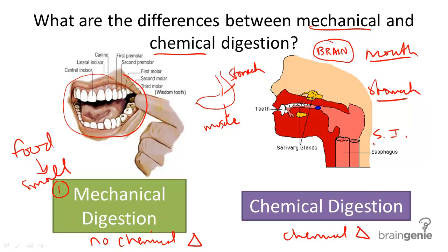This starts the process of chemical digestion. An enzyme known as salivary amylase will break down carbohydrates into simple sugars called monosaccharides. That's the first step of chemical digestion in the mouth with carbohydrates.